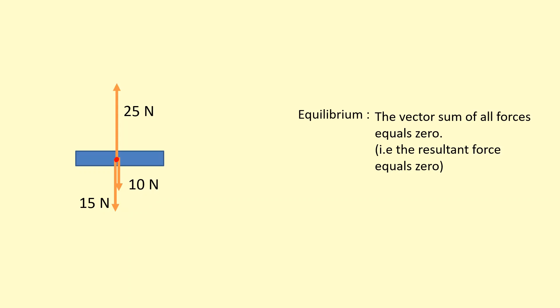There is a particular type of equilibrium called translational equilibrium. You may have come across that word in maths before — it just means moving up, down, left, right, forward, or backwards.